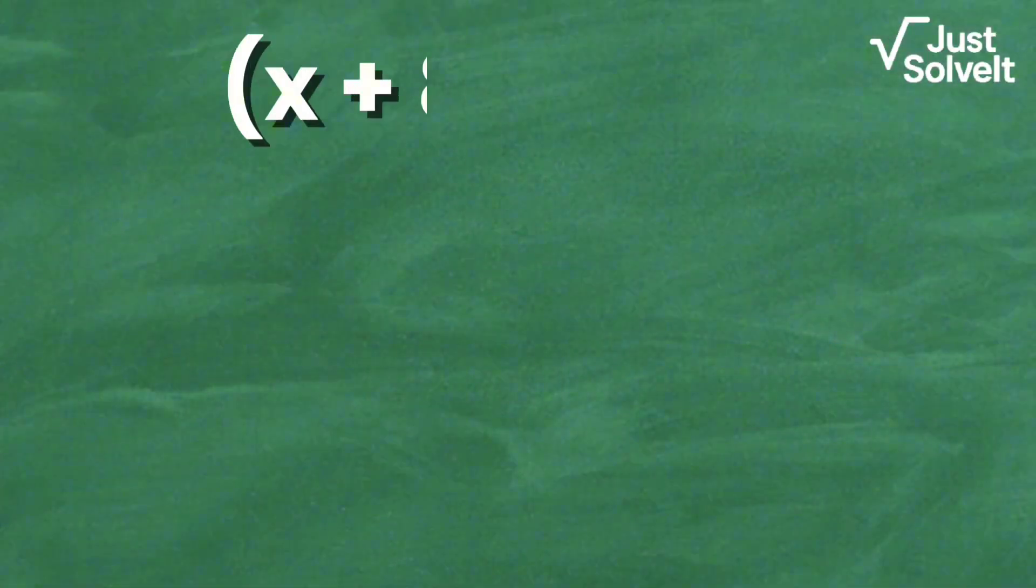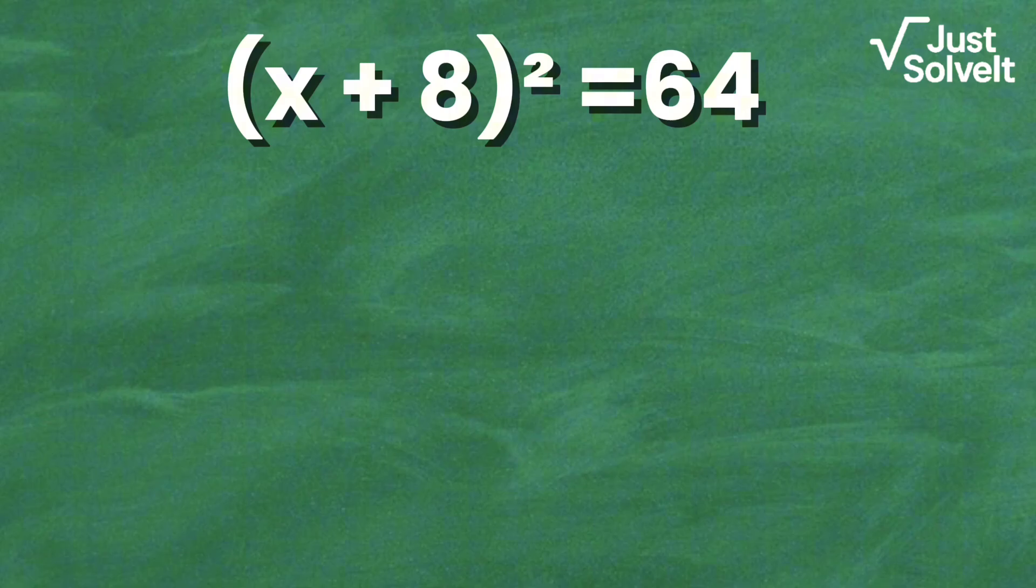We're solving this equation: (x + 8) squared equals 64. This is a classic quadratic equation and you'll see how to solve it in two ways.